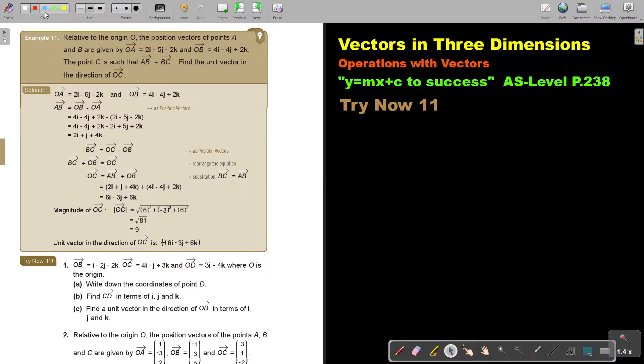Now let's find BC. So BC is going to be OC minus OB. But now I want to make OC the subject of the formula, so I take OB over to the other side.